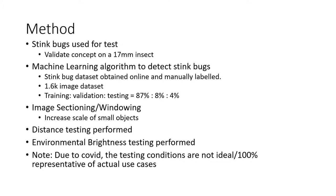Instead of making a machine learning algorithm based on every possible pest and disease, a single pest was chosen to narrow the scope of the algorithm. The brown marmorated stink bug was selected as it's medium-sized and poses significant risk to the kiwifruit industry. The dataset for these stink bugs was obtained using iNaturalist, and the machine learning algorithm implemented is the YOLO v4 darknet algorithm due to performance and accuracy reasons.